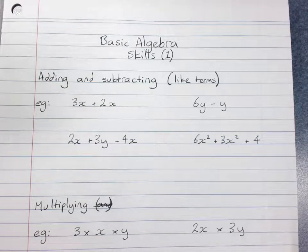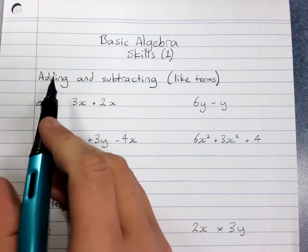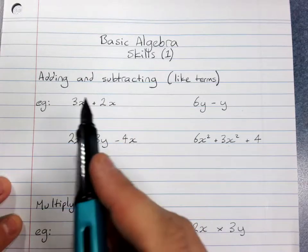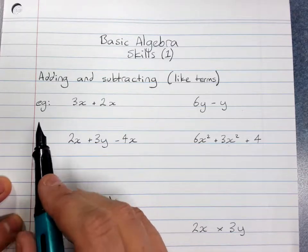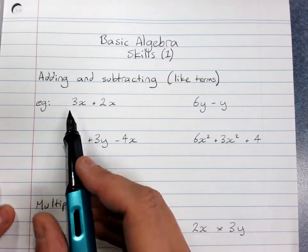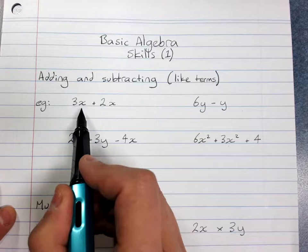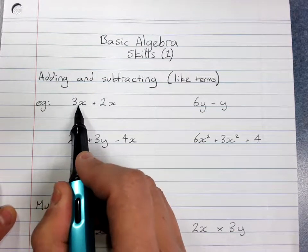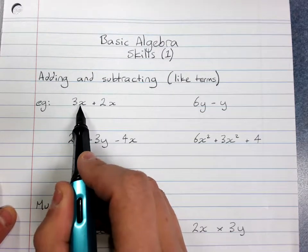Basic algebra skills. We'll look at adding and subtracting like terms, multiplying and dividing. Adding and subtracting, we're just looking at how many lots of particular things we've got. So if we look at the first example, this says 3 times x, which means 3 lots of x.